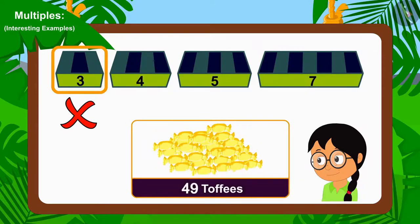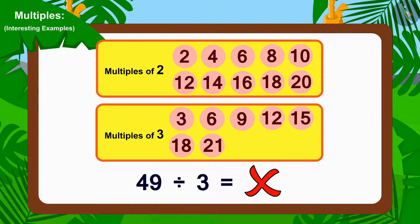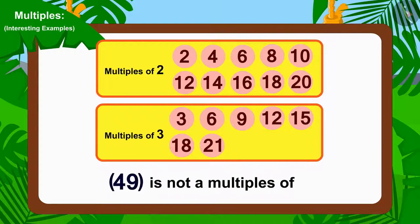And children, you remember the multiples learned in the previous video, don't you? Because we cannot divide 49 by 3, we can say that 49 is not a multiple of 3.